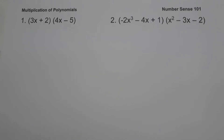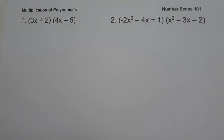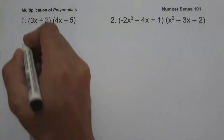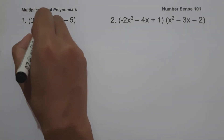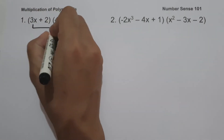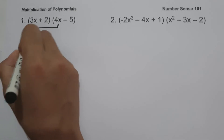So let's have the first example. On number one we have the quantity 3x plus 2 times the quantity 4x minus 5. To simplify this one, let us use the FOIL method. Let us have 3x multiplied by 4x, which gives us 12x squared.